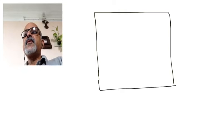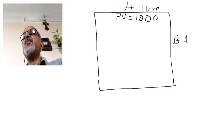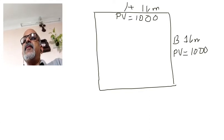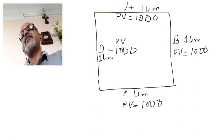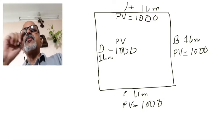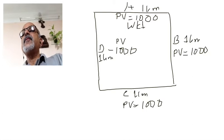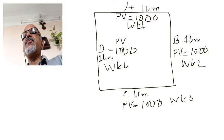This is Side A — it is one kilometer and has a budget of $1,000. Side B is also one kilometer with a budget of $1,000. Side C is also one kilometer with a budget of $1,000. Side D is also one kilometer with a budget of $1,000, which is known as the plan value. Side A is to be completed on week one, Side B on week two, Side C on week three, and Side D on week four.